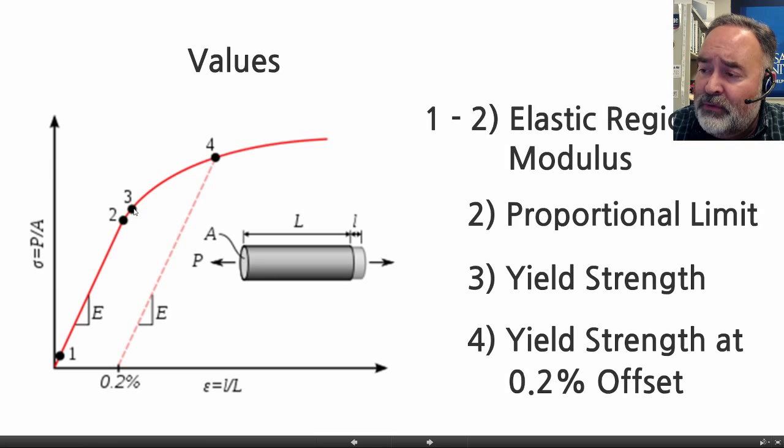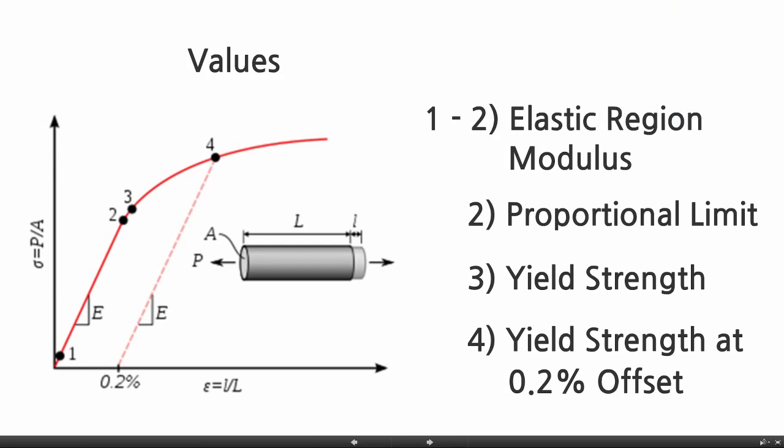We have two points here where this thing is starting to change. And then over here we have another value, number four. So we even have more vocabulary words. Let me get out of here so you can see what these things are.